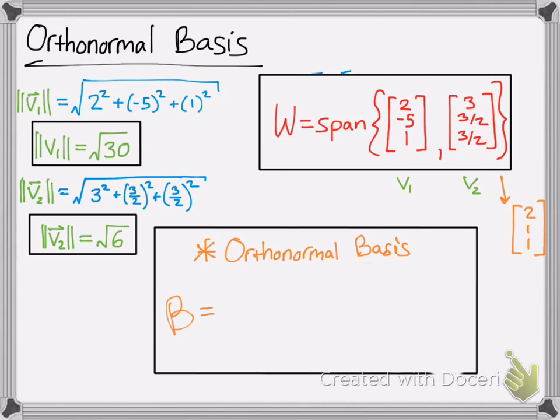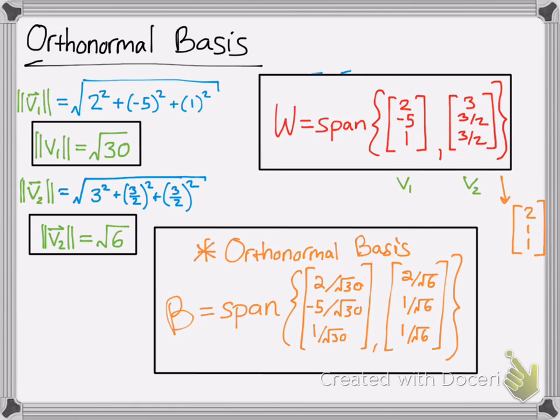Here it comes. So we'll just call it β equals the span of 2 divided by radical 30, negative 5 divided by radical 30, and 1 divided by radical 30. Remember, just dividing each component by its magnitude. And then we do the same thing for the other side. That's why I made a little note over there. So that's how you find the orthonormal basis.